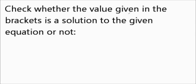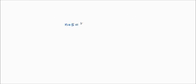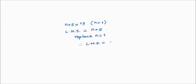Check whether the value given in brackets is a solution to the given equation or not. The first one: n plus 5 equals 19, check for n equals 1. We solve LHS only since RHS is just one number. LHS equals n plus 5; replacing n equals 1 gives 1 plus 5 equals 6. LHS is not equal to RHS, therefore n equals 1 is not the solution.